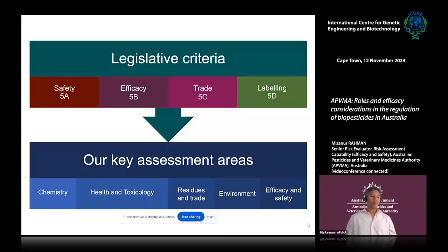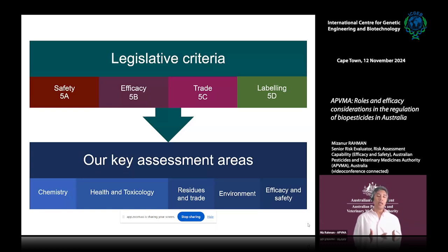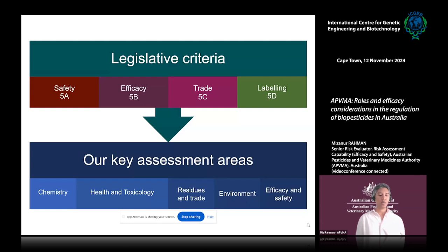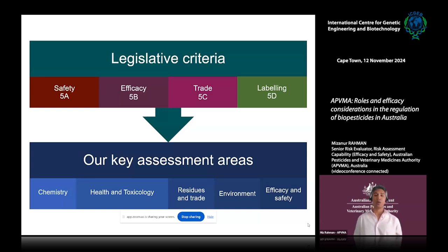The centerpiece of our legislation is the Agriculture and Veterinary Chemical Code Act 1994. The AgVet Code Act provides this responsibility to the APVMA by legislative instrument. Any applicant wishing to register a product, vary the particulars or conditions of registration, or hold a permit for use, needs to satisfy the APVMA that the chemical product meets the relevant statutory criteria as defined in Section 5A (safety), 5B (efficacy), 5C (trade), and 5D (labelling) of the Agricultural and Veterinary Chemical Code Act.